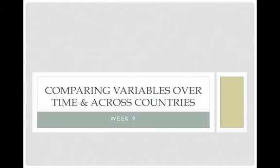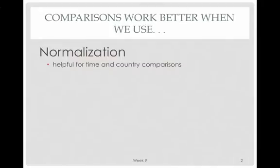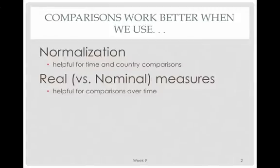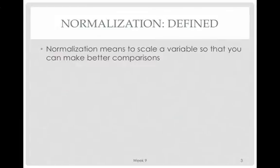This lecture will cover comparing variables over time and across countries. Comparisons work better when we use a few different devices. The first one is normalization, and that's helpful both for time and for cross-country comparisons. Real versus nominal measures are also important, and real measures are helpful for comparisons over time. The third device is purchasing power parity, and that's helpful for comparisons across countries, covered in the next PowerPoint.